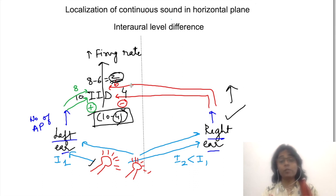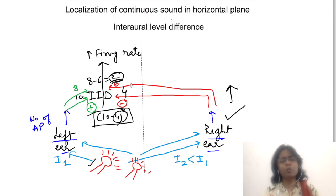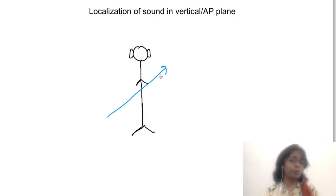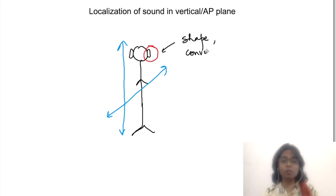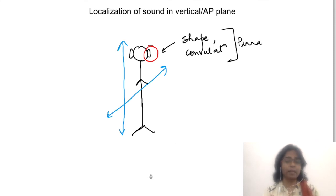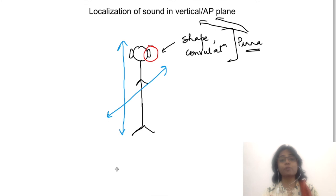So far we have discussed how we localize sound coming from one side or the other in the horizontal plane. But how do we localize whether sound is coming from front or back, or from up or down? The shape of the pinna and its convolutions change the quality of the sound that reaches the inner ear depending on the direction it comes from, and further processing occurs accordingly. So basically, the pinna helps in localization of sound in the vertical and antero-posterior planes.